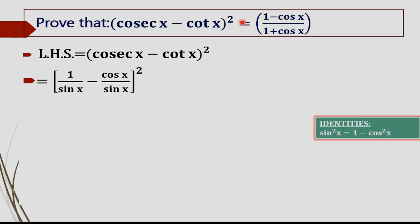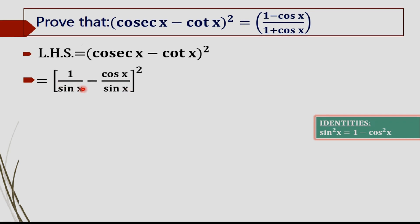Since we need the terms in terms of 1 minus cos x and 1 plus cos x, we are changing cosec x as 1 by sine x, and cot x as cos x divided by sine x. Now by taking the LCM of these terms, we get the next expression.